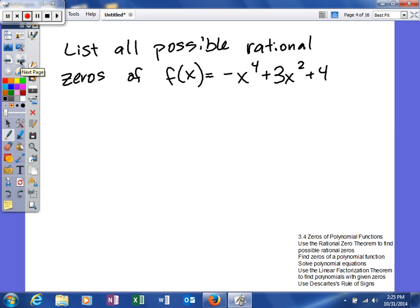Here's our first example. It says, list all possible rational zeros of f(x) = -x⁴ + 3x² + 4. First thing we're going to do is find the constant. Our constant in this problem is 4. The factors of 4, numbers that will divide evenly into 4, are 1, 2, and 4.